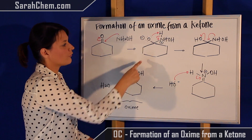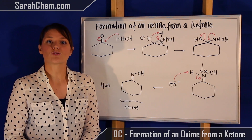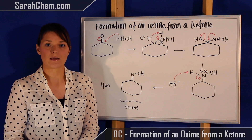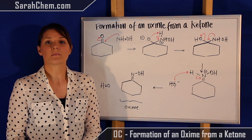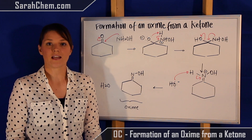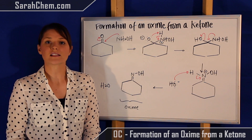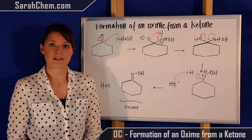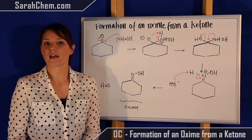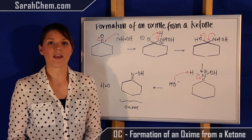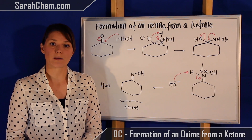What we have now formed is a tetrahedral intermediate. A tetrahedral intermediate means that the carbon is tetrahedral, or sp3 hybridized. And intermediate because it's not going to be staying that way — it's not very stable.